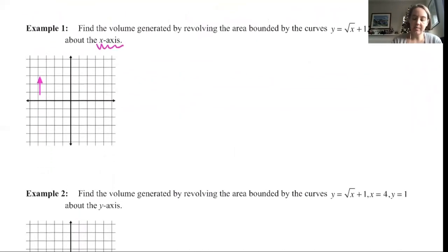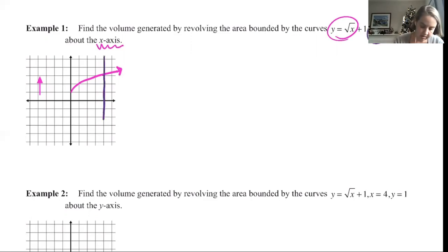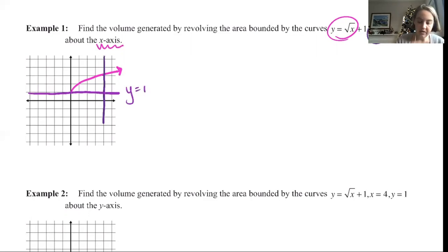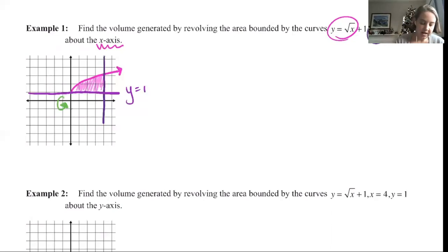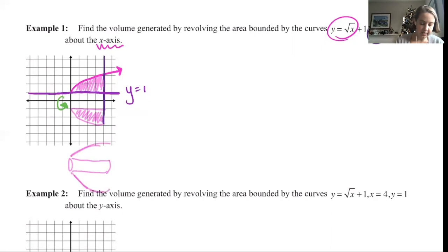Find the volume generated by revolving the area bounded by y = √x + 1 (a square root curve shifted up one), x = 4 (a vertical line at 4), and y = 1 (a horizontal line at 1), revolving around the x-axis. So we're taking this shaded region and revolving it around the x-axis. It's going to be reflected — three-dimensionally you have a circle here, the inside would be a cylinder, and the outside is kind of a cone or funnel shape.